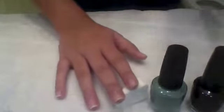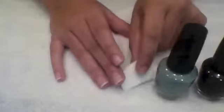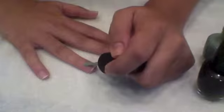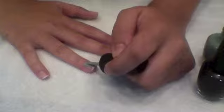So I'm just going to do it on one nail to show you. I'm going to use this nail. The first thing that you're going to want to do is take your teal polish and apply one coat of it.